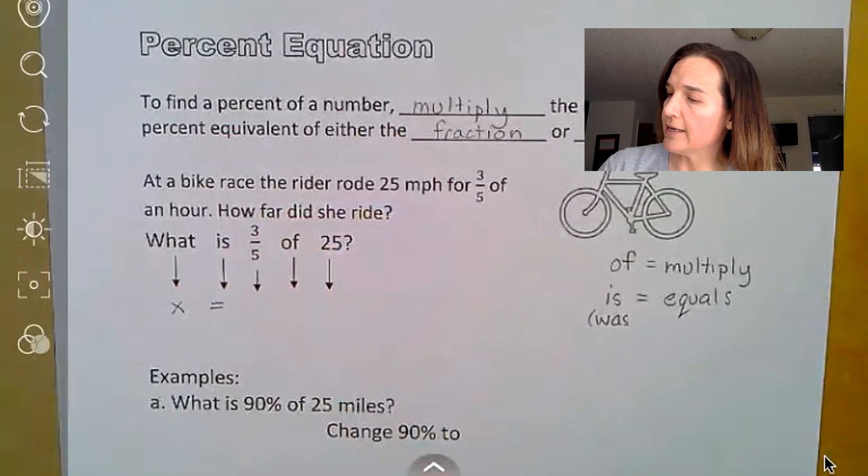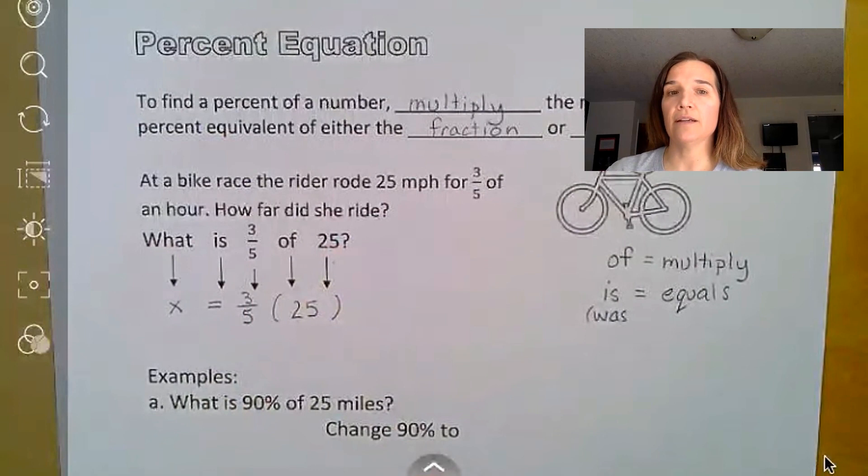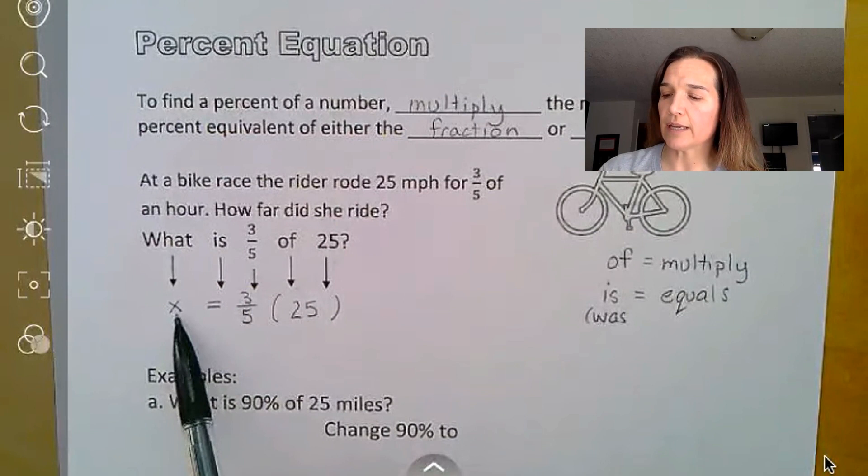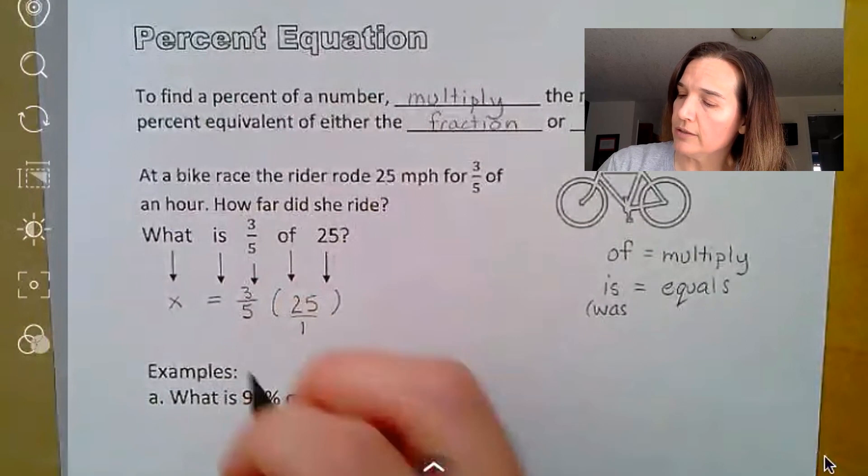Is, that's our equal sign, three fifths, well that's the number three fifths. Here it says of, and that's going to be my multiplication, 25. And notice that there's two types of ways that this will work out. One is it'll say x equals, and the two numbers will be on one side, and so the variable's already isolated, you just need to multiply these out to get your answer.